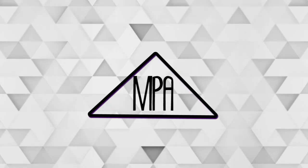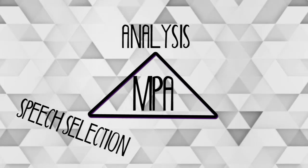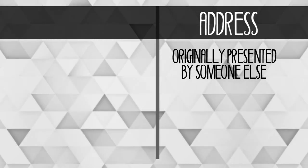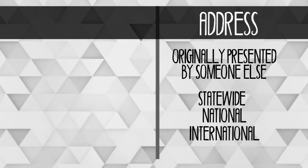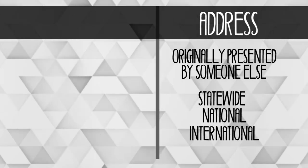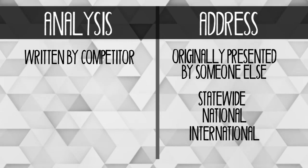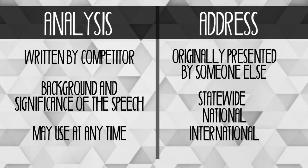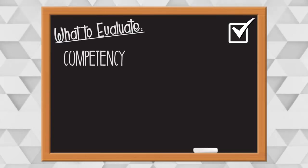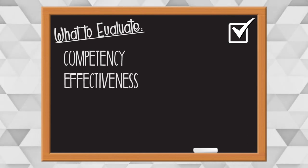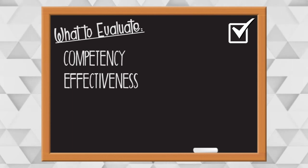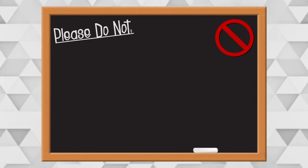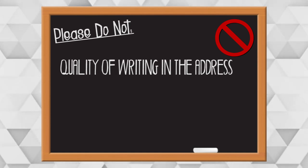Memorized Public Address is an event based on analysis, speech selection, and speaking ability. The address portion is a speech that was originally presented by someone else. The content of the speeches must have a statewide, national, or international significance. The competitors will interpret the address and combine it with their own original analysis. The address is the quoted material, while the analysis should discuss the background and significance of the speech. The analysis may be included any time throughout the presentation. You should judge how competent the speaker is in analyzing the original speech and the effectiveness of their presentation. Since the analysis is written by the competitor, you may judge the quality of writing, development, and effectiveness of the analysis. However, do not judge the quality of writing in the address portion. In MPA, memorization is mandatory.